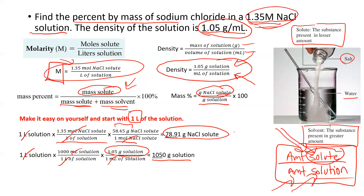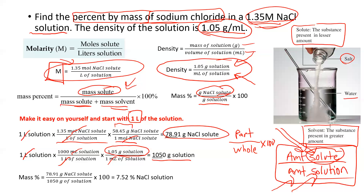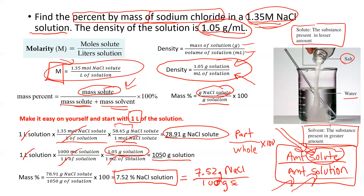So I take the mass of the solute — the part — and the mass of the solution — the whole. The units are grams for both. I take that ratio: 78.91 divided by 1050, times 100, using three significant figures, and I get 7.52% by mass sodium chloride solution. That essentially means there are 7.52 grams of sodium chloride solute per 100 grams of solution, and I can use that as a conversion factor.